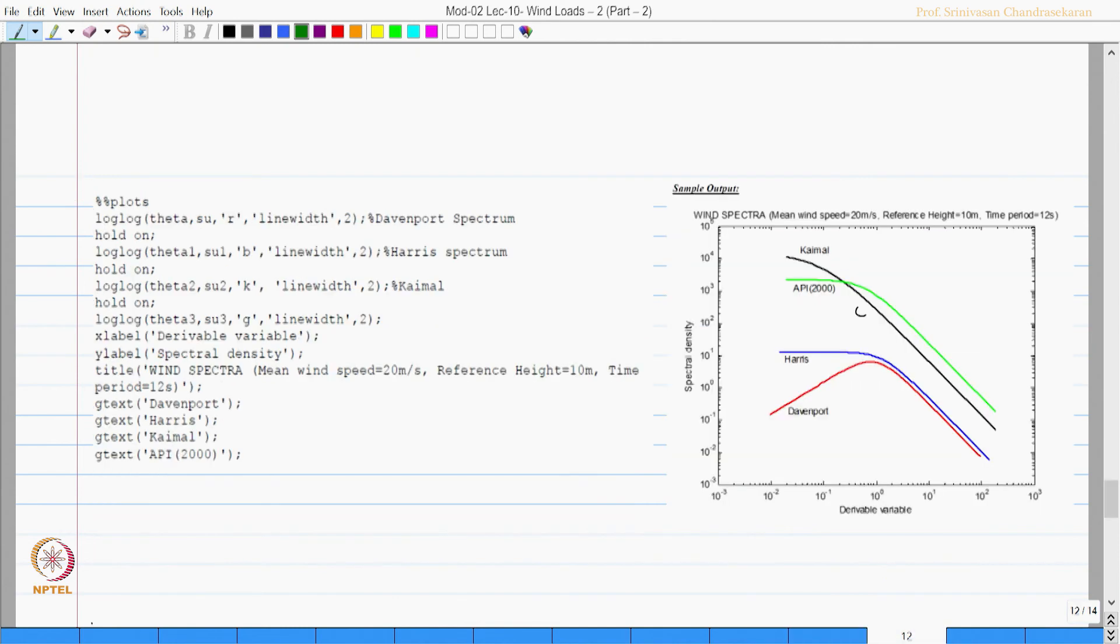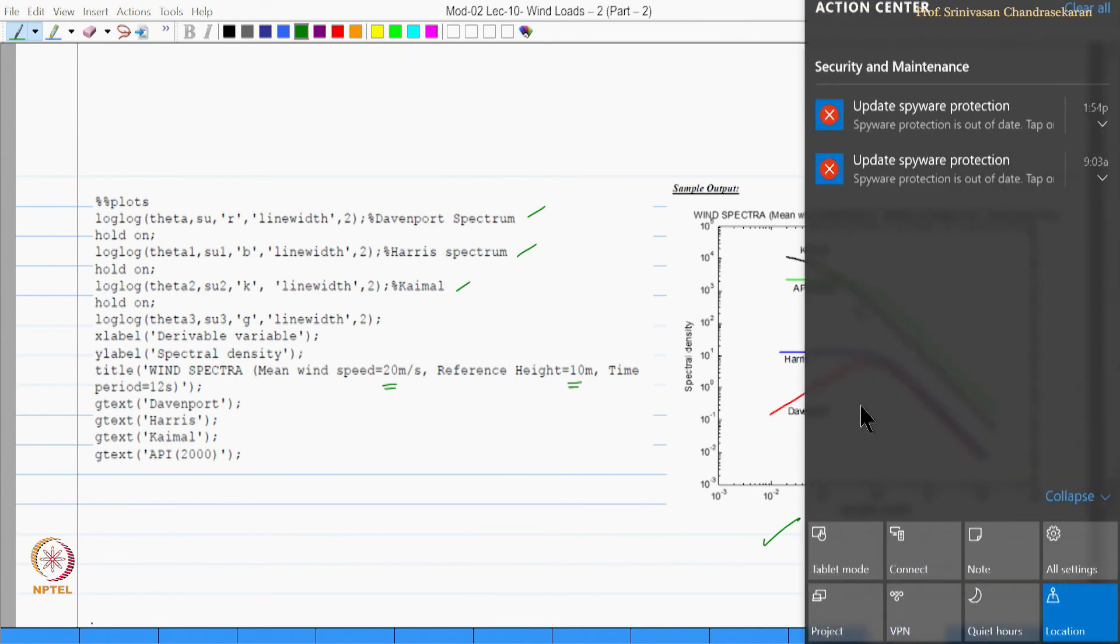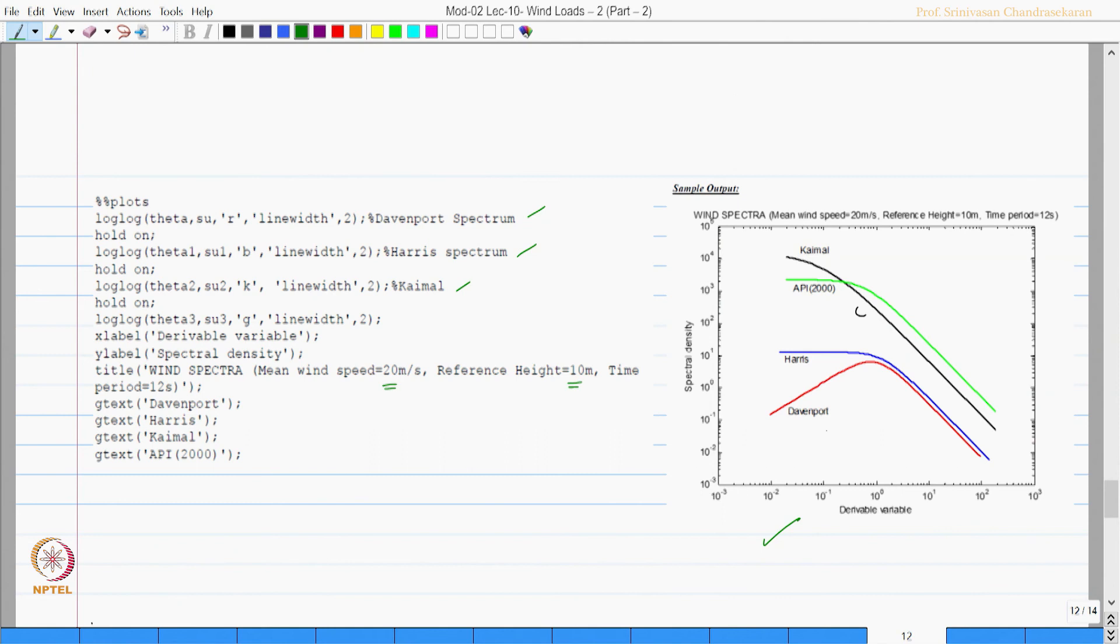Then the plot actually gives you all the four: Davenport, Harris, Kaimal and API for a constant value of 20 meter per second and reference of 10 meter. The screen shows you all the plots comparable. One can see the variation between all the expressions available on wind spectra like Davenport, Harris, API and Kaimal.